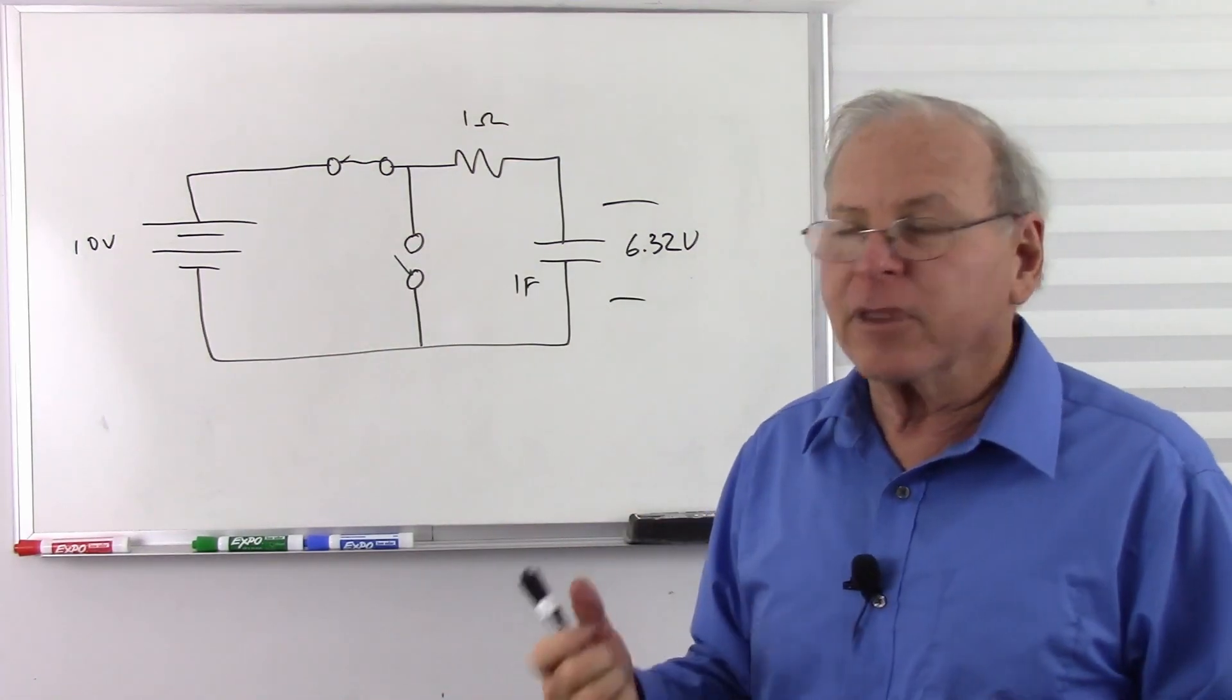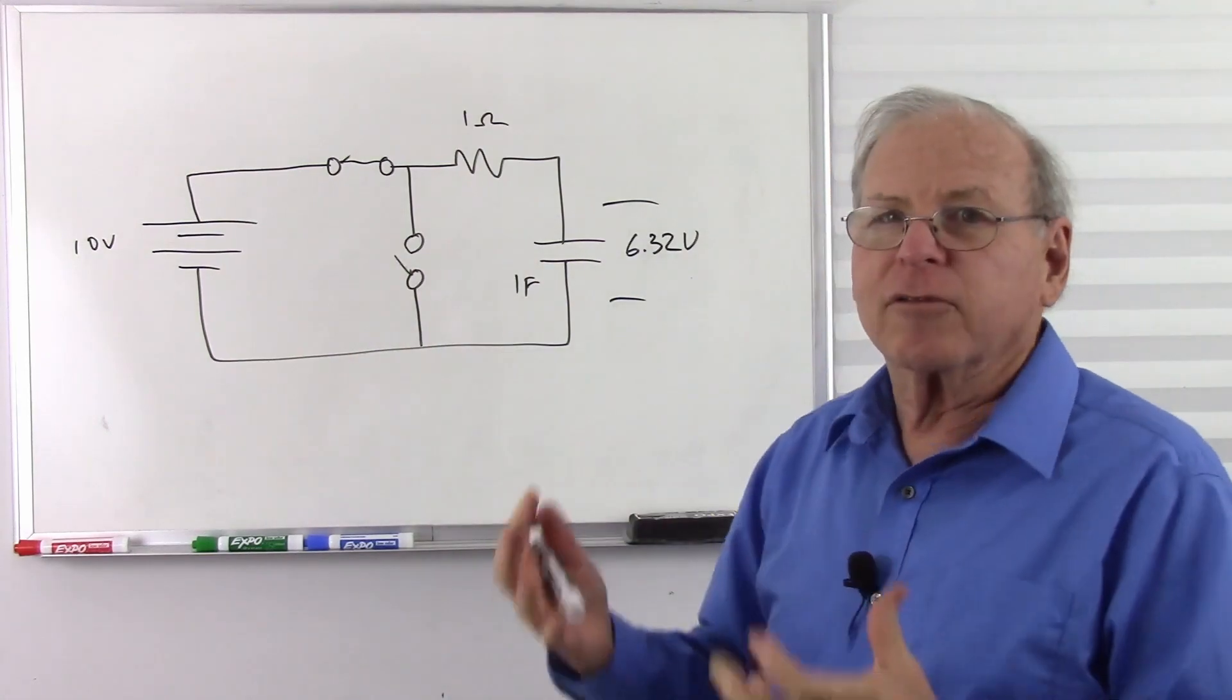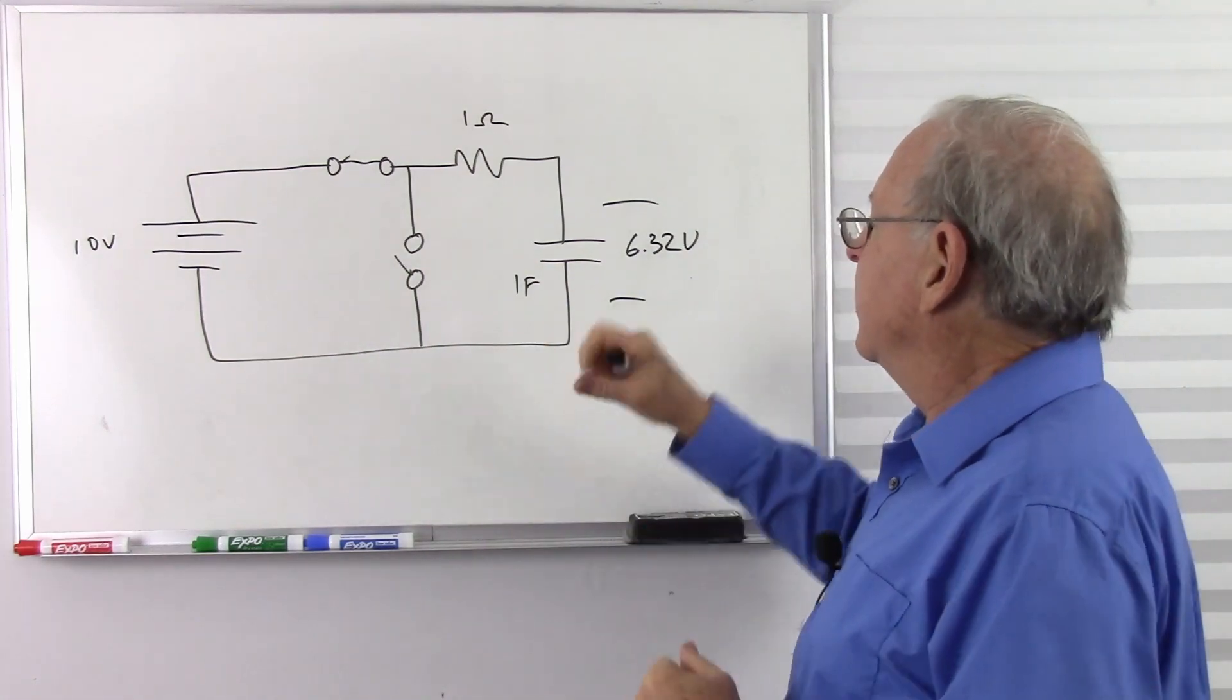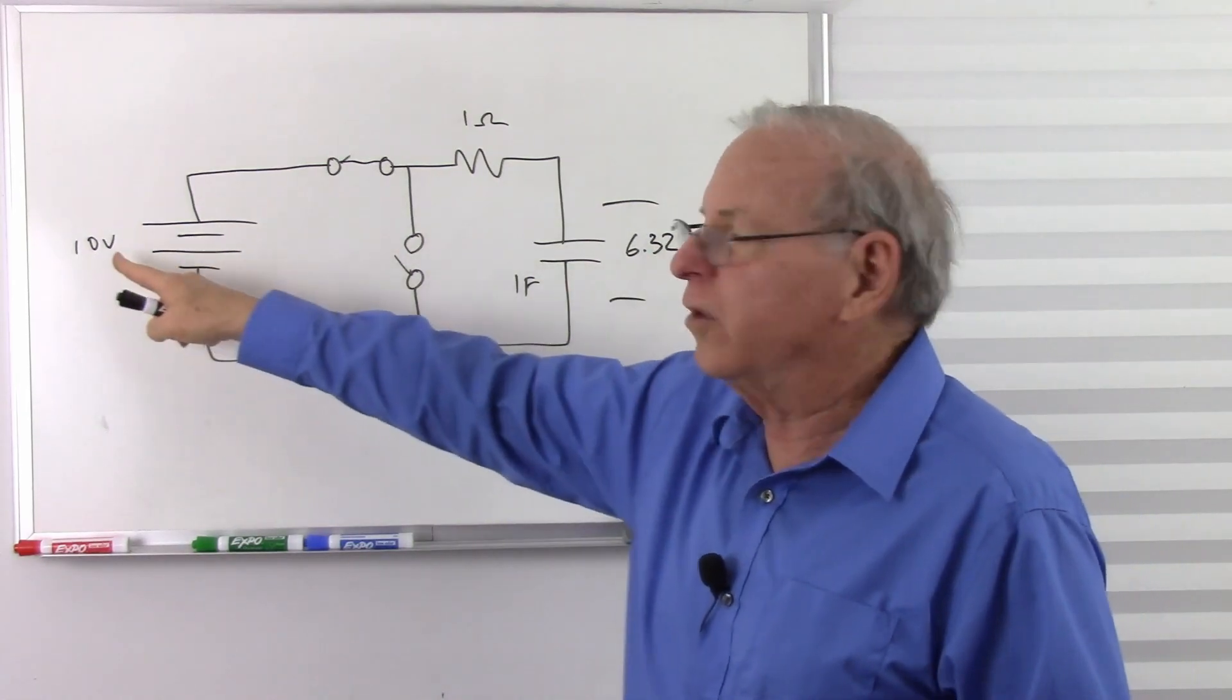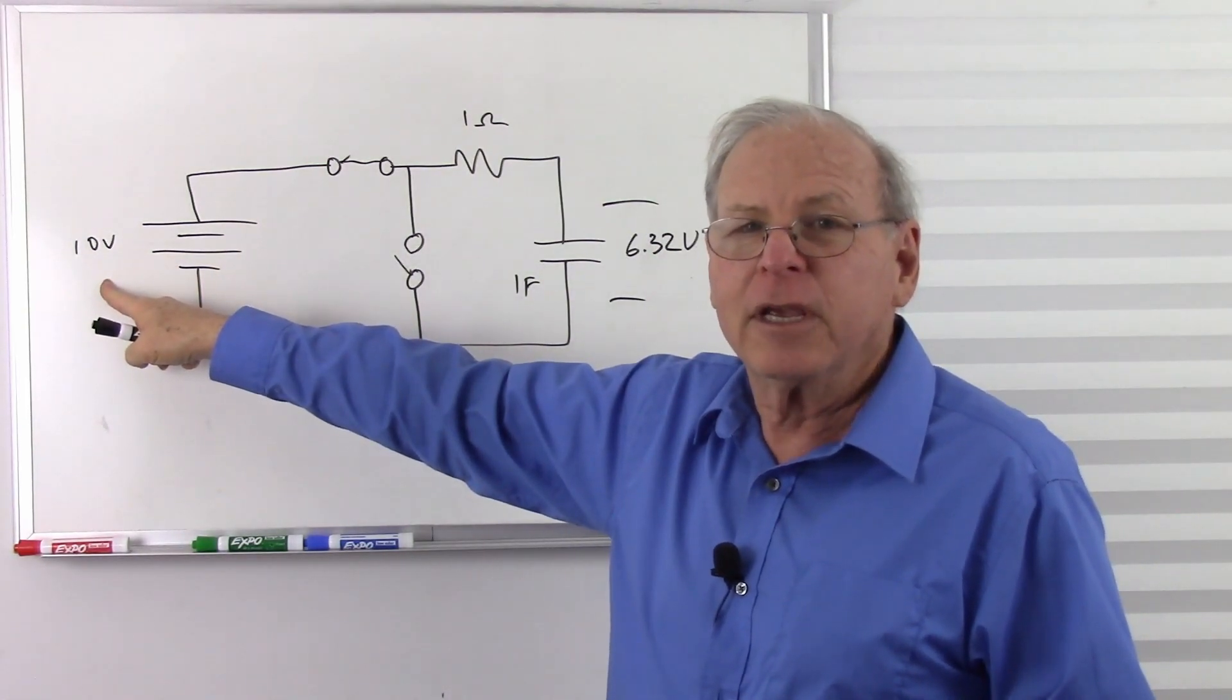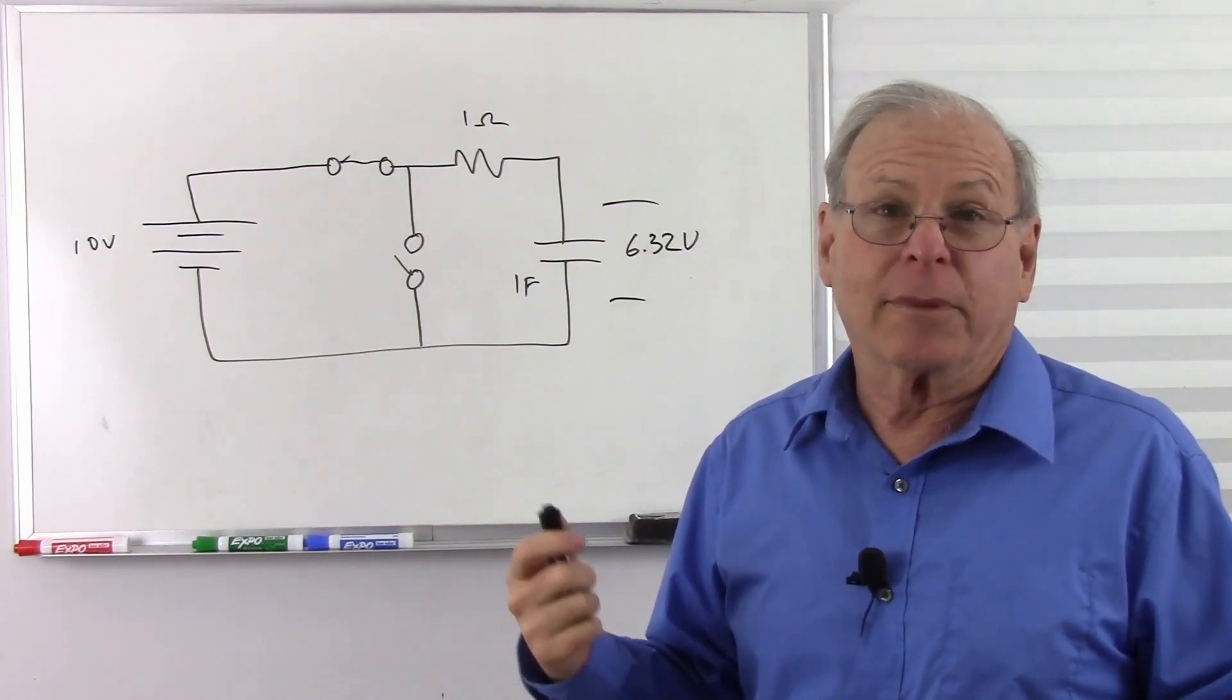Capacitor acts the same way with electricity. We push some electricity in, we get some voltage. Push some more in, we get some more voltage. And we keep pushing it in, that voltage gets higher and higher until either we can't push any more because we've reached our voltage here, or we exceed the electrical strength of the capacitor and it's destroyed. Sometimes they even explode.